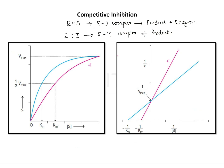In competitive inhibition, the inhibitor is a structural analog of the substrate, and they compete with one another to bind to the active site of the enzyme. Km increases because the affinity of the substrate to the enzyme is decreased in the presence of the inhibitor. Since Km is inversely proportional to binding affinity, decreased affinity corresponds to increased Km. Vmax remains unchanged, because once the enzyme binds with the substrate, the reaction proceeds at normal velocity.